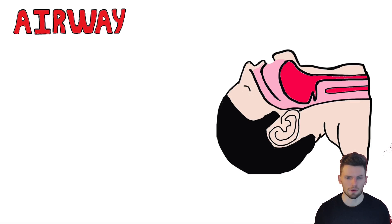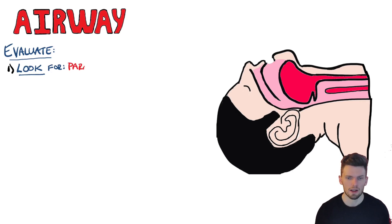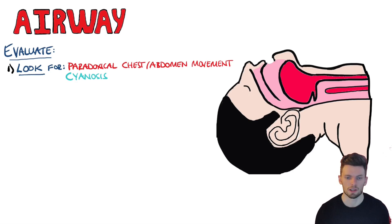The A stands for airway. We're checking that there's no obstruction, but also evaluating the likelihood that the patient will be able to maintain the airway if they deteriorate further. You can watch the patient and look for signs of obstruction, such as paradoxical chest or abdomen movements, cyanosis — which is a blue discolouration of the skin — or use of the accessory muscles.